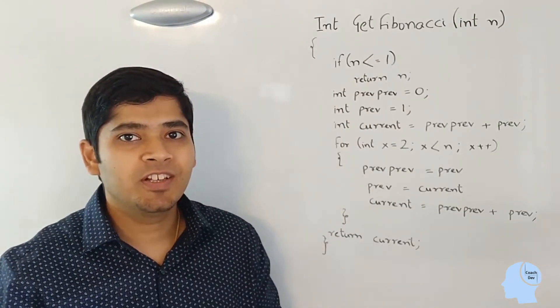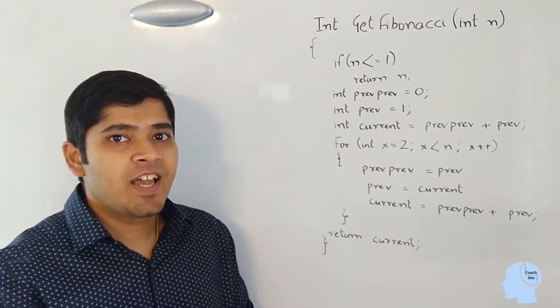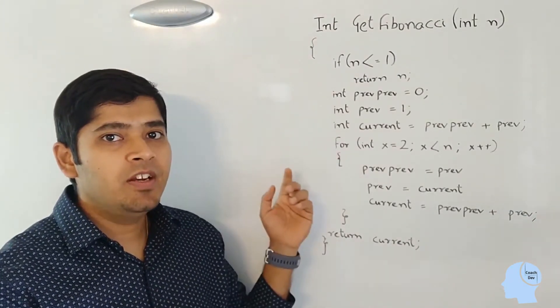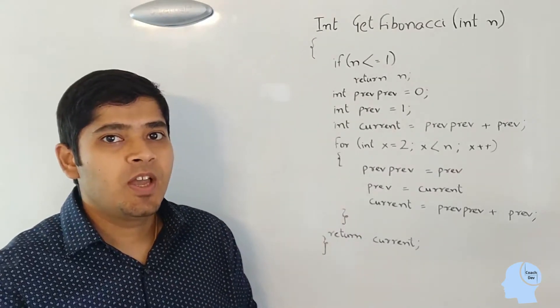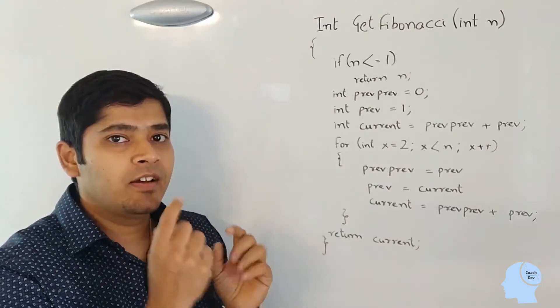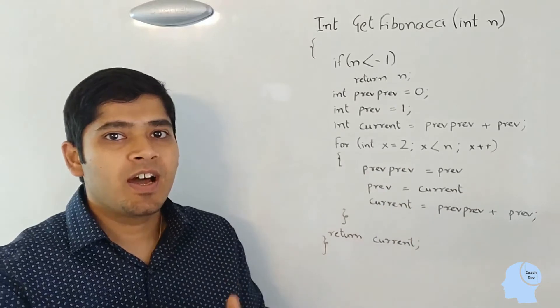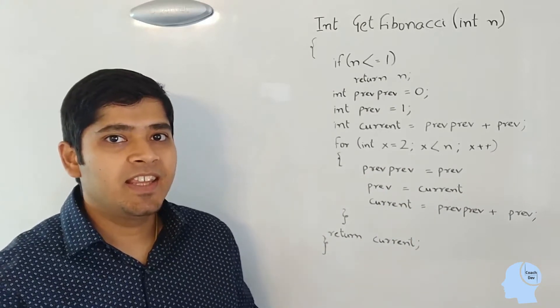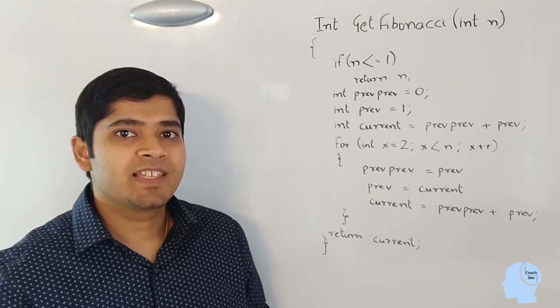So here is the solution in which we are keeping track of only three things. We are keeping track of the current, the previous, and the previous to previous value. We just simply run a for loop and make sure that the current value and the previous value and the previous to previous are set correctly. At the end, we just simply return the current value for a given index n.